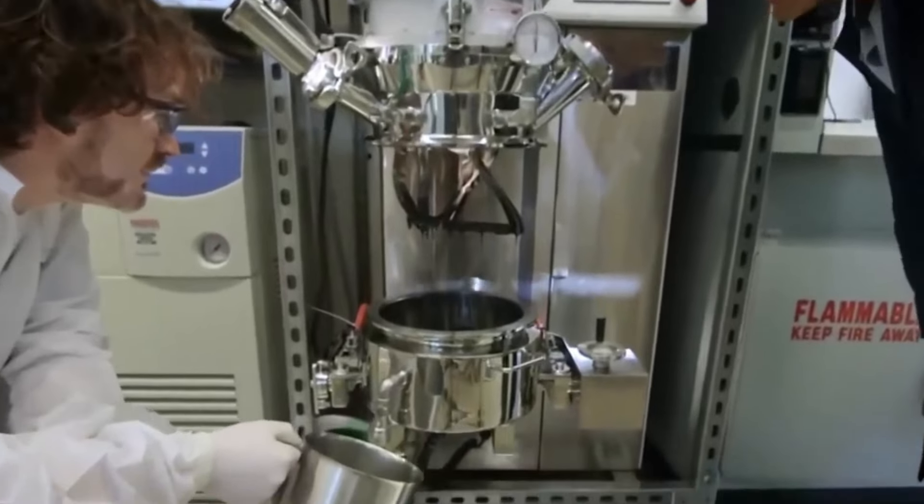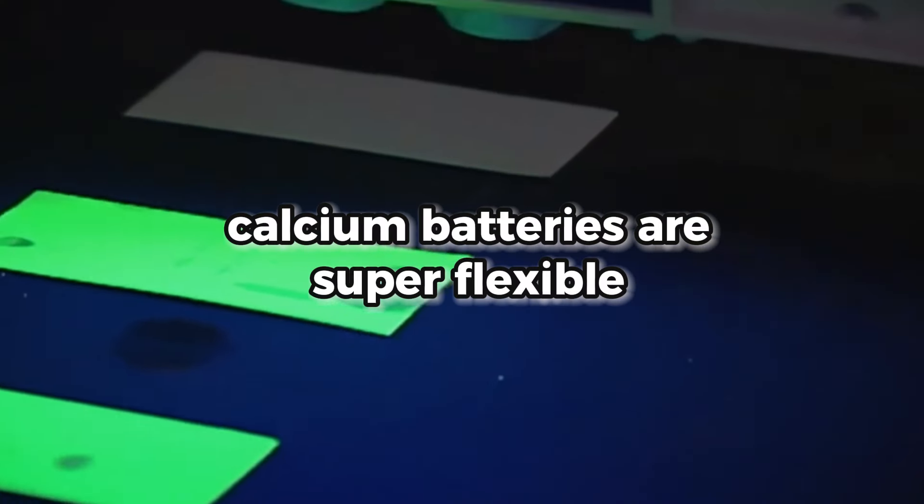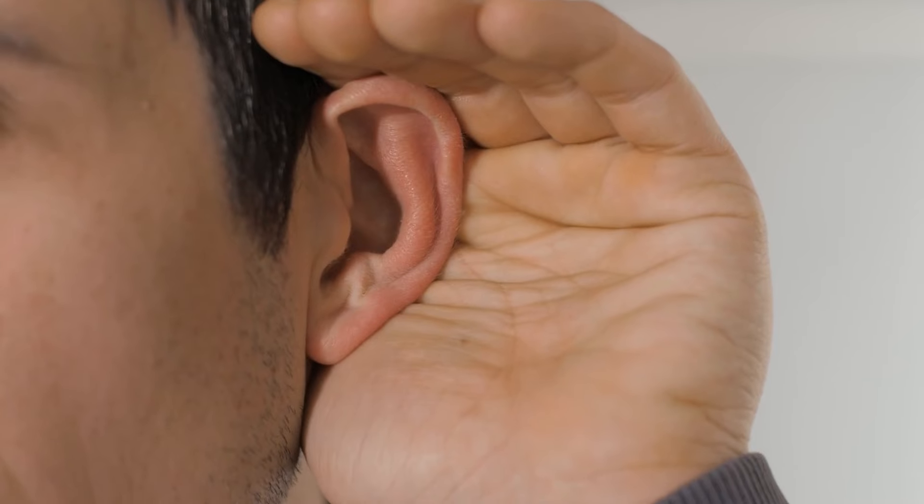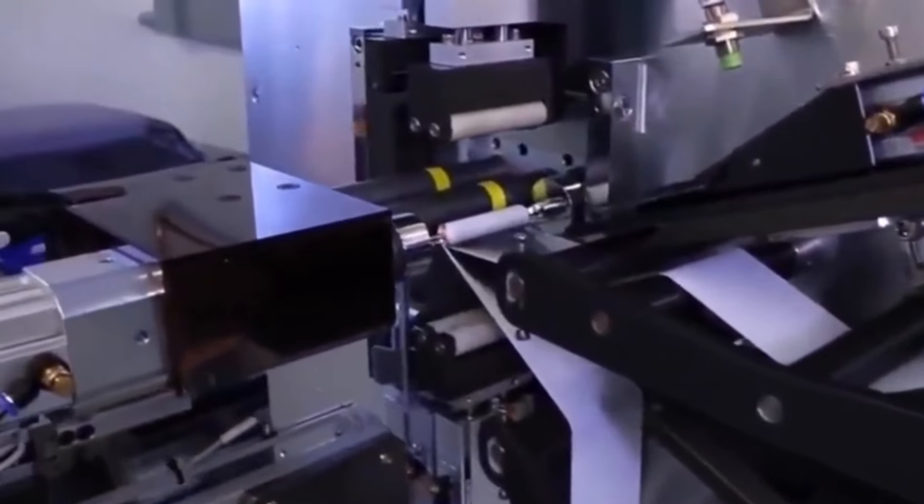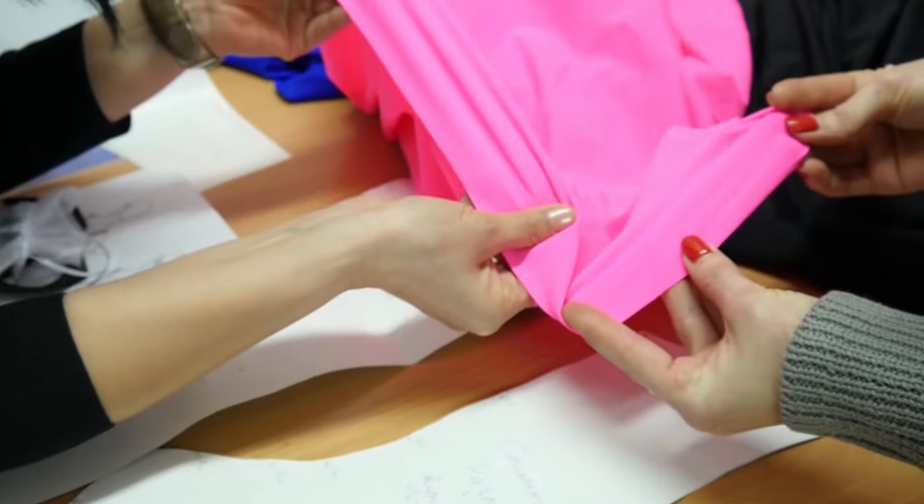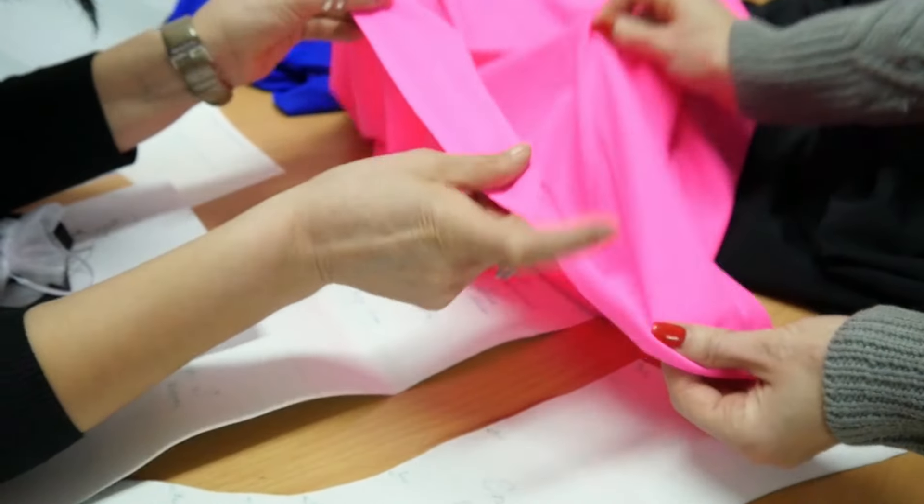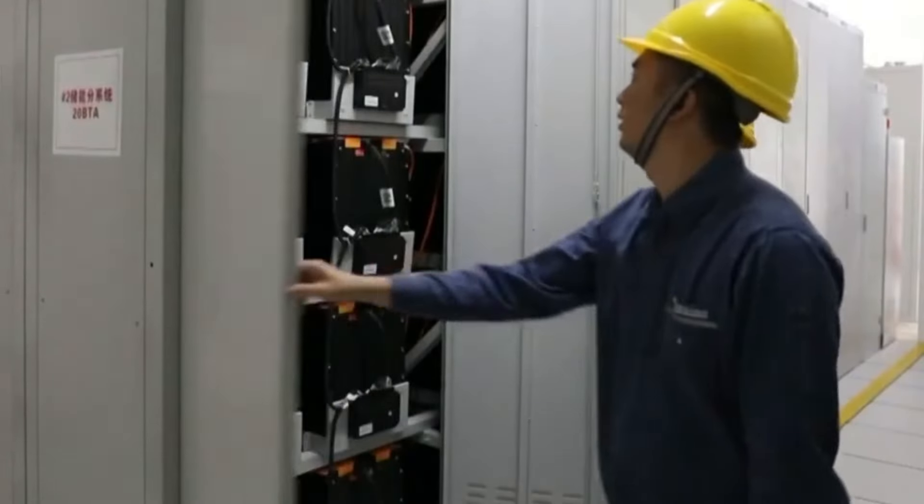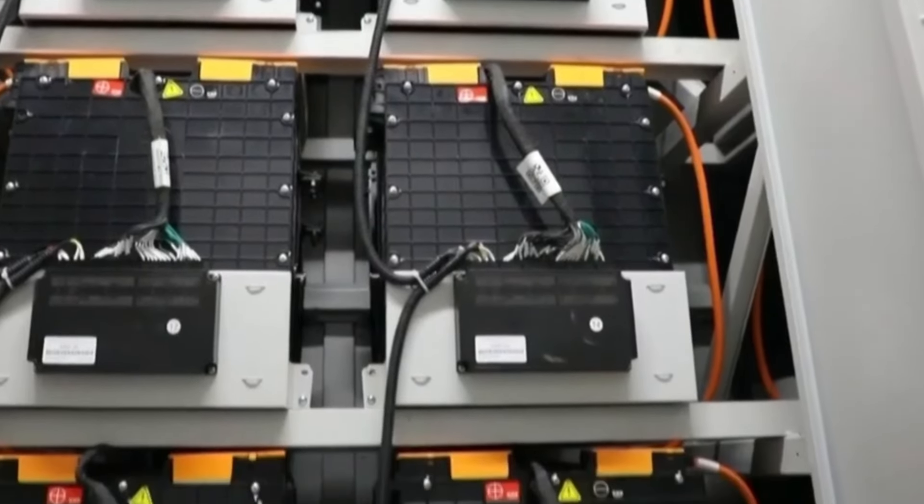But wait, there's more. Turns out, calcium batteries are super flexible. Yep, you heard that right. The folks behind these batteries showed that they can weave them into thin fabrics, like the stuff your everyday clothes are made of. Imagine wearable gadgets, blending right into your wardrobe.